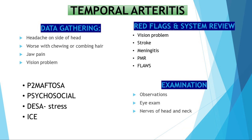They might also explain jaw pain and vision problem. These are the positives you're looking out for in temporal arteritis. How do you go about gathering all those questions? It goes back to our structure, which is SOCRATES. By asking about the site, they will tell you. You ask about the onset, the character of the pain, does the pain move anywhere — they might tell you about the jaw pain. Anything makes it better or worse — the patient might tell you it gets worse with chewing. Ask about any other symptoms and don't forget severity on a scale of 1 to 10.